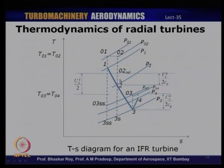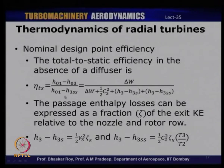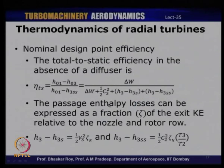The numerator is H01 minus H03 (stagnation enthalpy). The denominator is H01 minus H3,S (static enthalpy condition), where the added components are the difference between point 03 and point 3SS. These three components include ½C3², the enthalpy difference H3 − H3,S, and H3 − H3,SS.